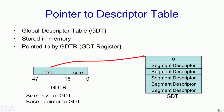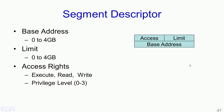Let us look at what the contents of the segment descriptor are. The segment descriptor contains three parts: a base address, a limit, and access rights. The base address and limit can take values from 0 to 4 gigabytes, while the access rights are bits which specify various access policies such as execute, read, write, or the privilege level for that particular segment.